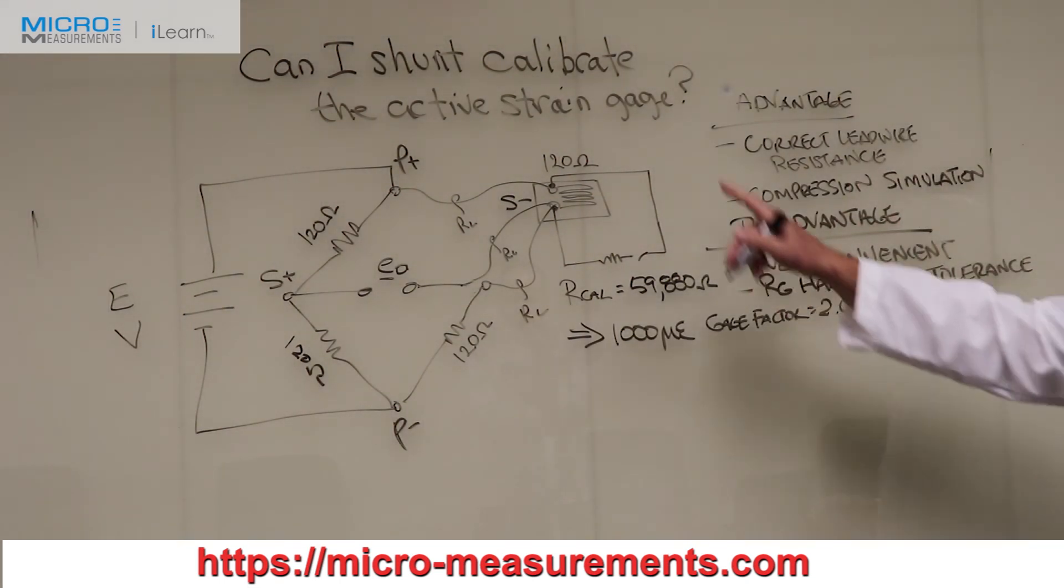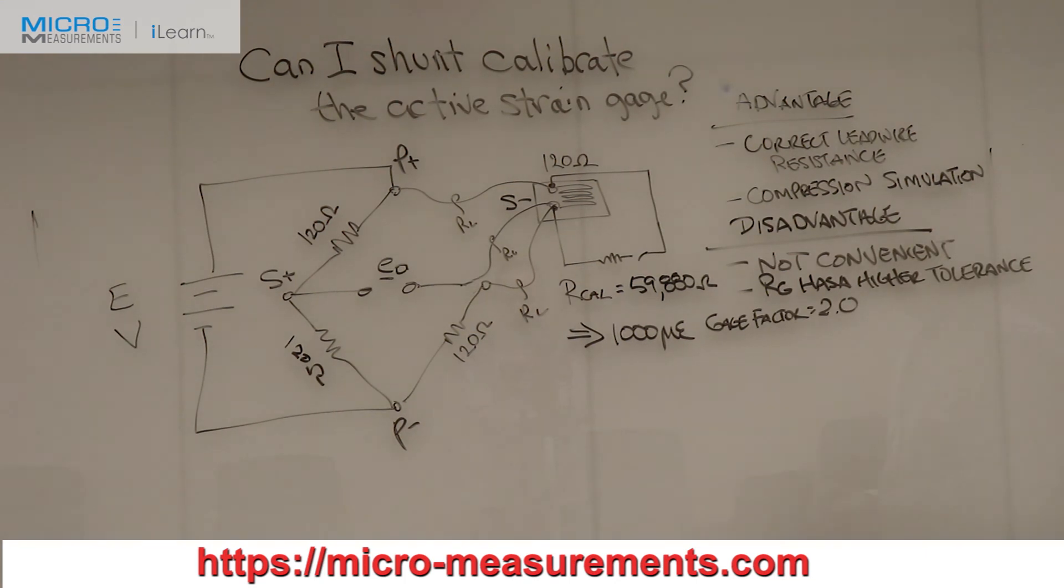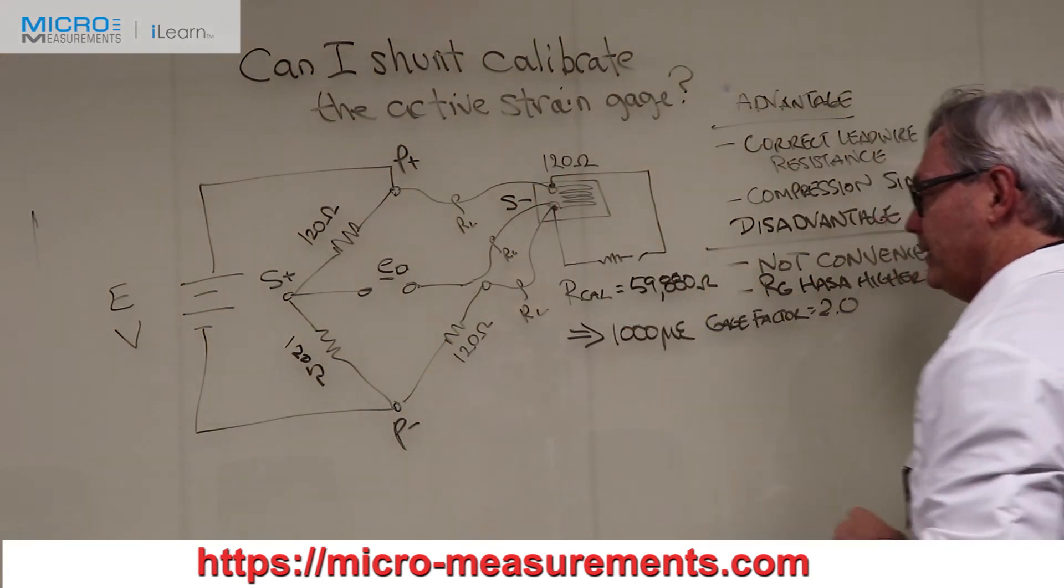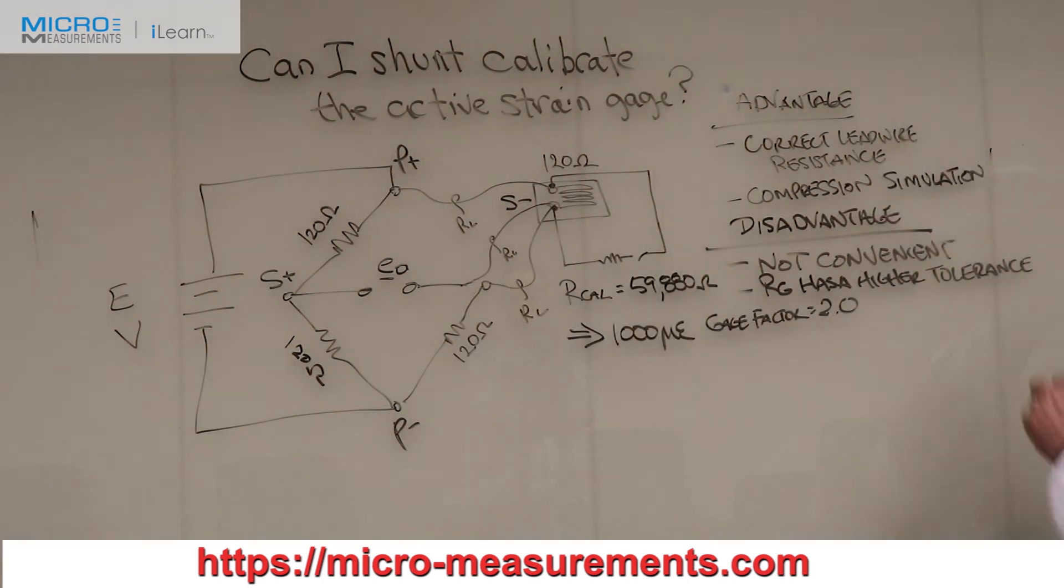So in answer to the question, can I shunt calibrate the active gauge? The answer is yes. It allows you to correct for lead wire resistance. It simulates a compressive strain. And what I would call a disadvantage is that it's not convenient, and typically R sub G has a higher resistance tolerance.